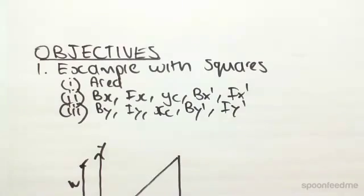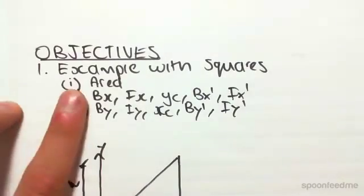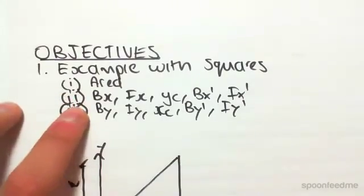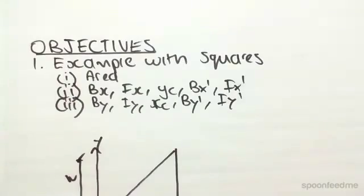Hey guys, the objective of this video is to do an example with squares. Just like the previous video, we're going to be finding area, bx, ix, yc, bx dash, ix dash, by, iy, xc, by dash, and i y dash.